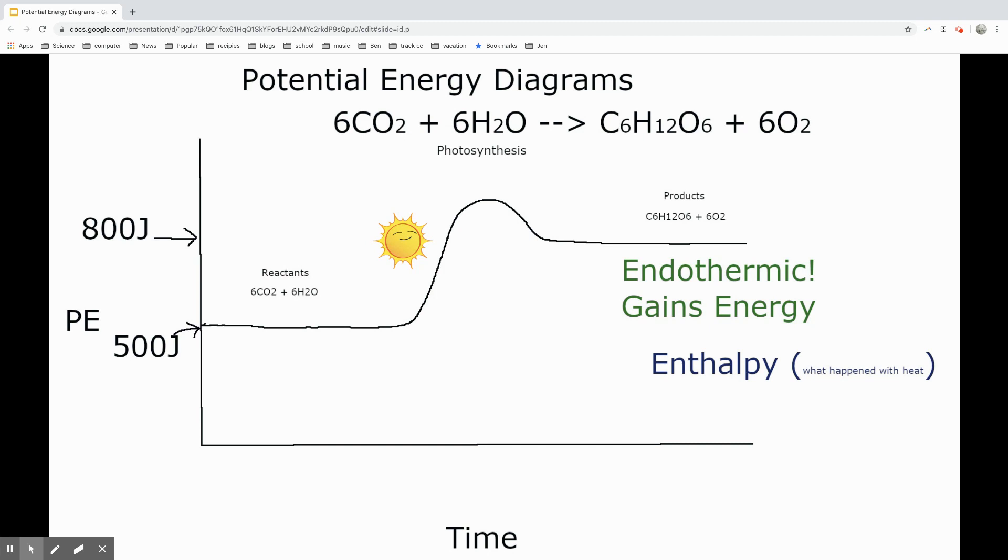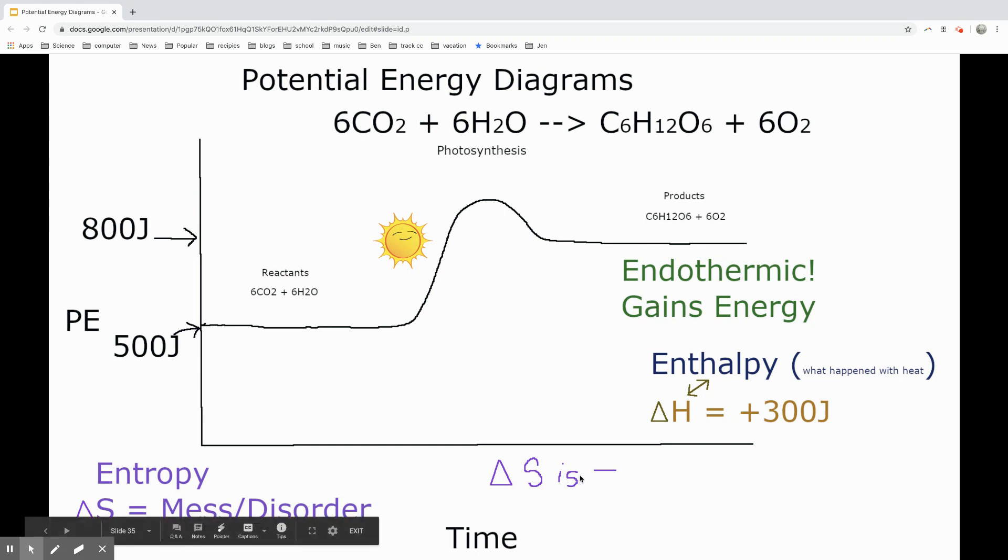The enthalpy, what happened to the heat? Well, if I was at 500, now I'm at 300. Guess what? My delta H, my enthalpy is a positive 300 joules. And in this situation, we talk about the entropy, the mess or disorder. Well, we've got a situation where this is negative. This is not preferred by nature. This was a gas and a liquid or a gas and a gas. And now we have them over here as a solid and a gas. This has become more ordered, less messy. So this is a situation where we have a negative entropy. And the endothermic, the enthalpy is a positive because it's gaining energy.